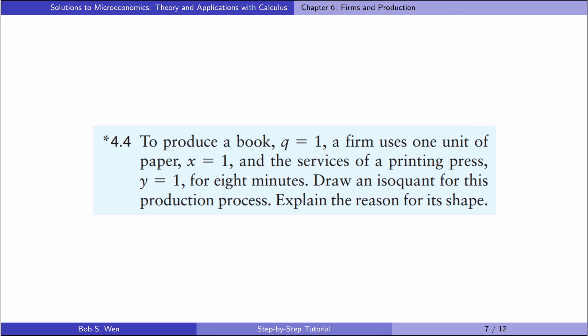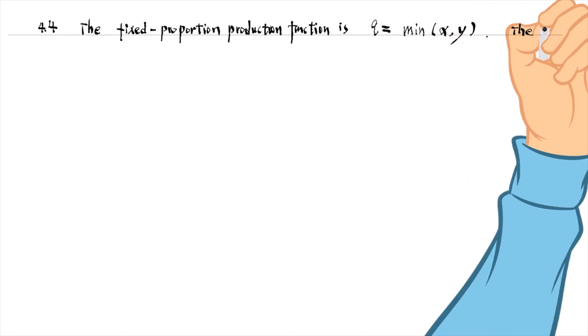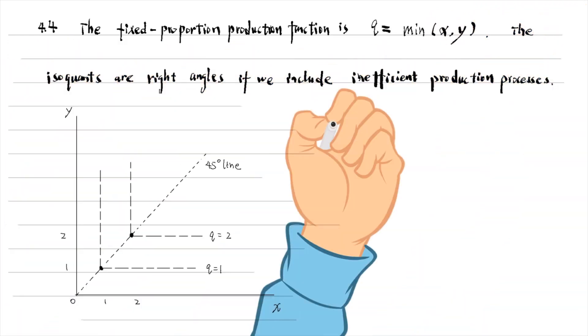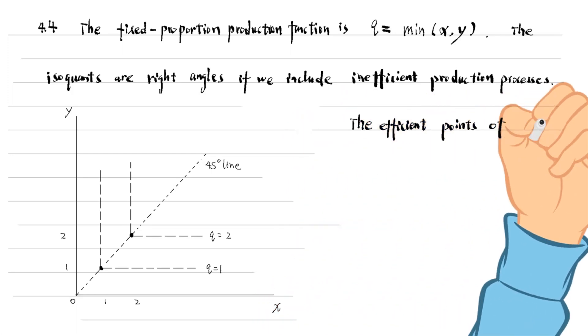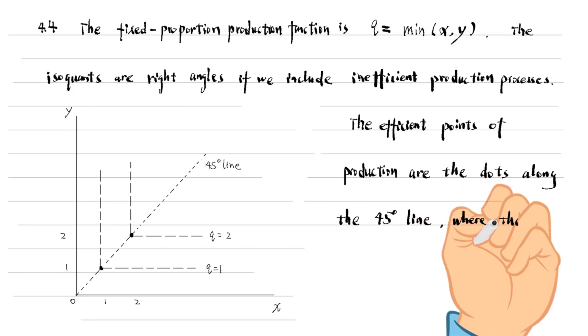Let's do exercise 4.4. To produce a book (Q = 1), a firm uses one unit of paper (X = 1) and one surface of a printing press (Y = 1). Draw an isoquant for this production process and explain the reason for its shape. The fixed proportion production function applies here. The isoquants are right angles if we include inefficient production processes. The efficient points of production are the dots along the 45-degree line, where the firm uses equal quantities of both inputs.